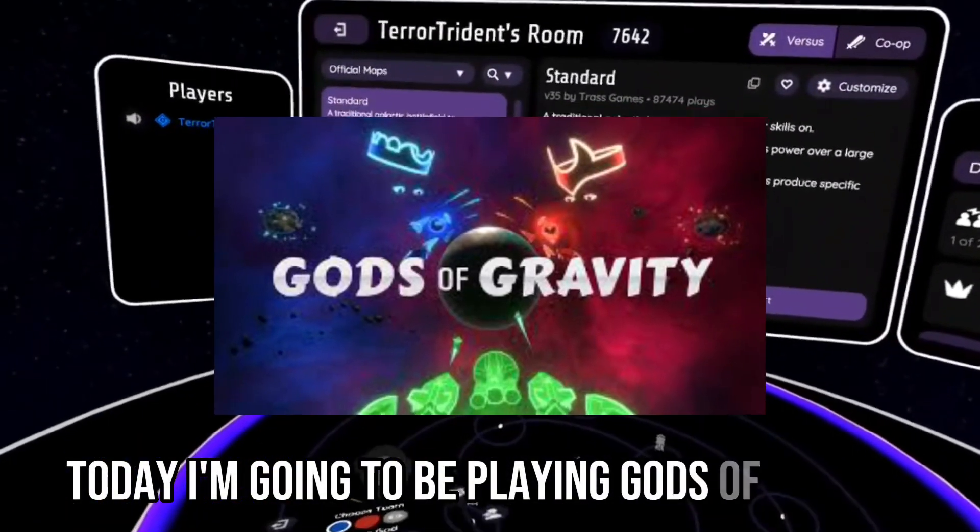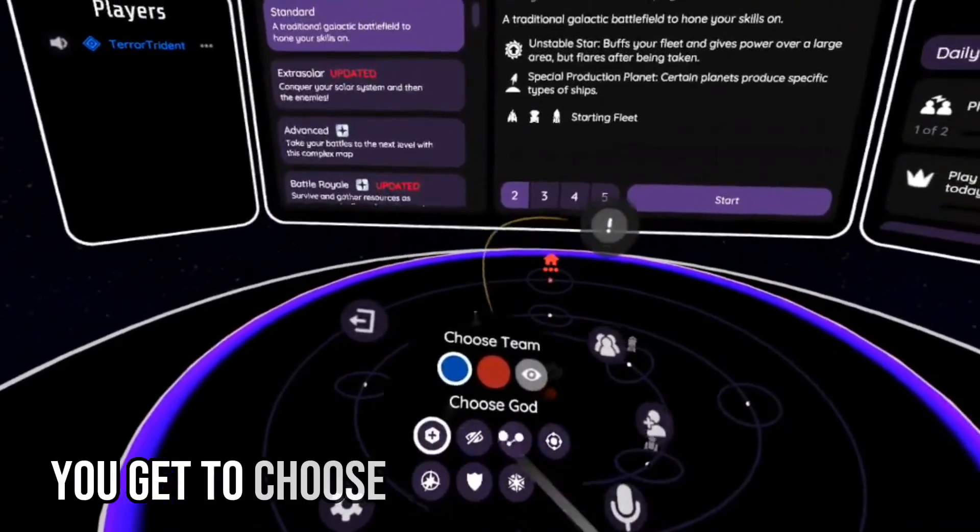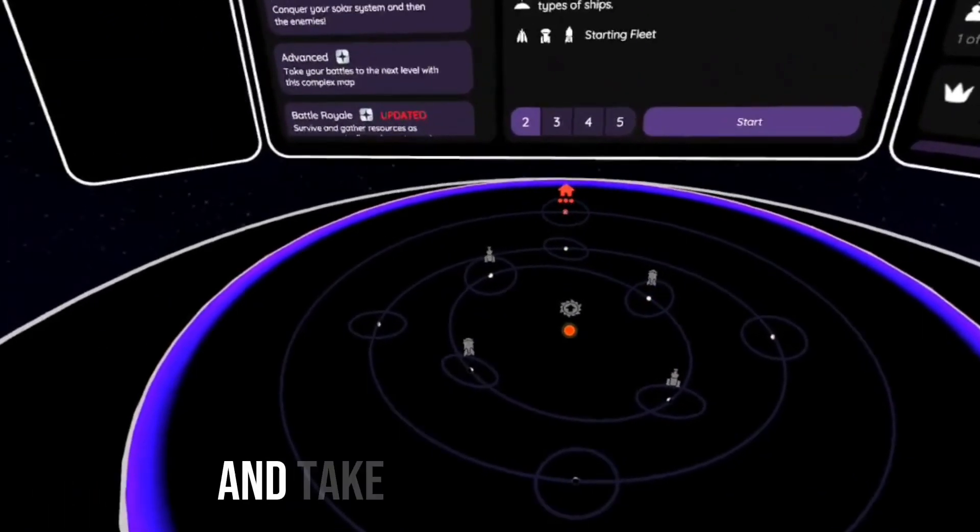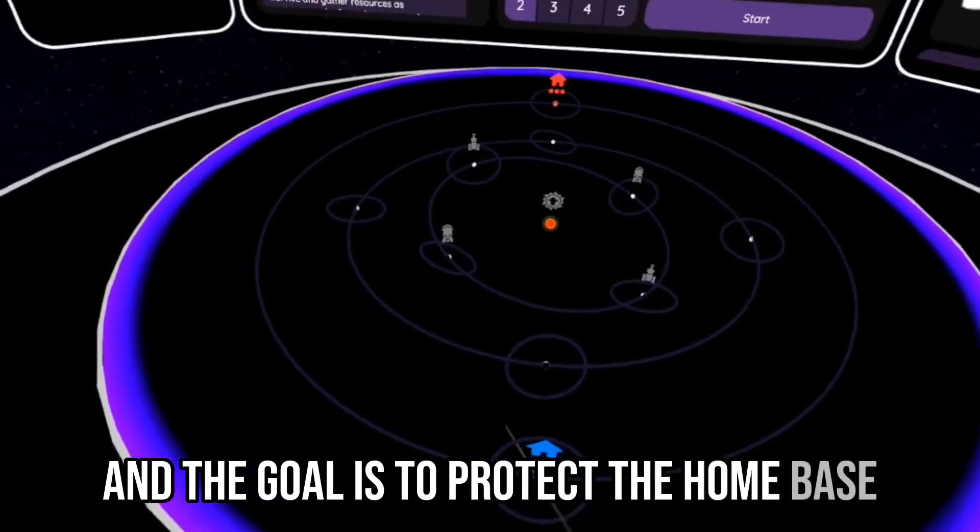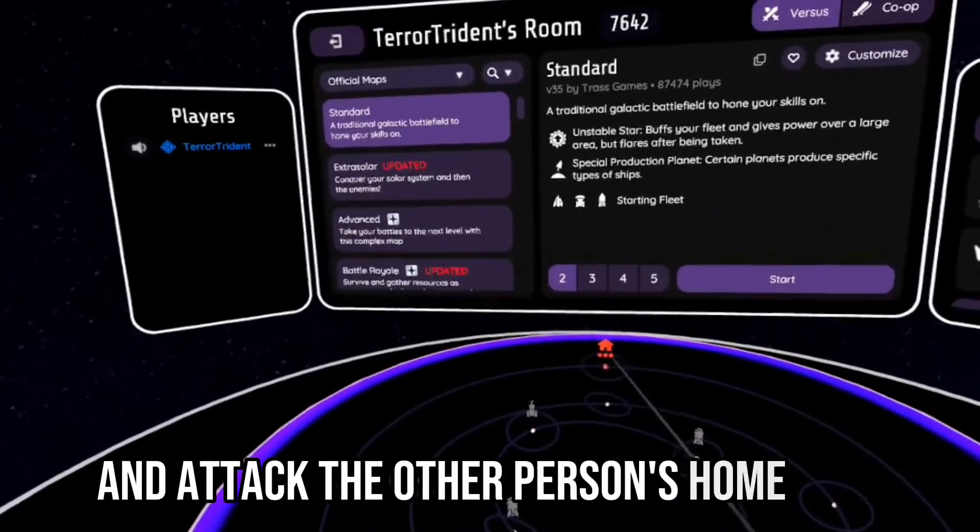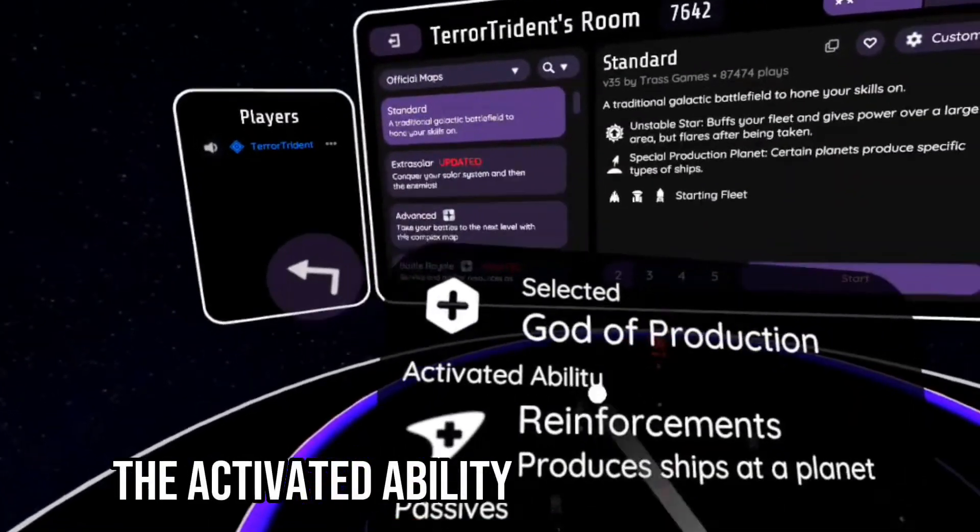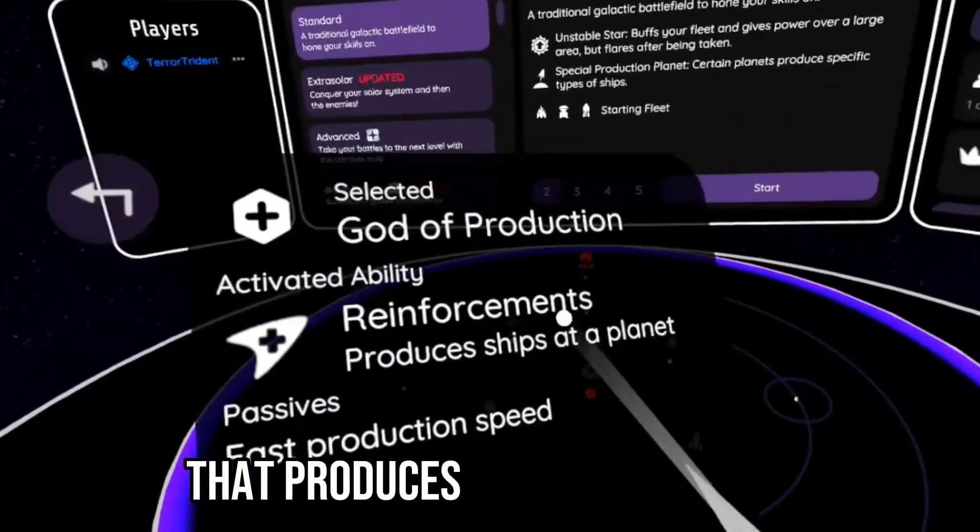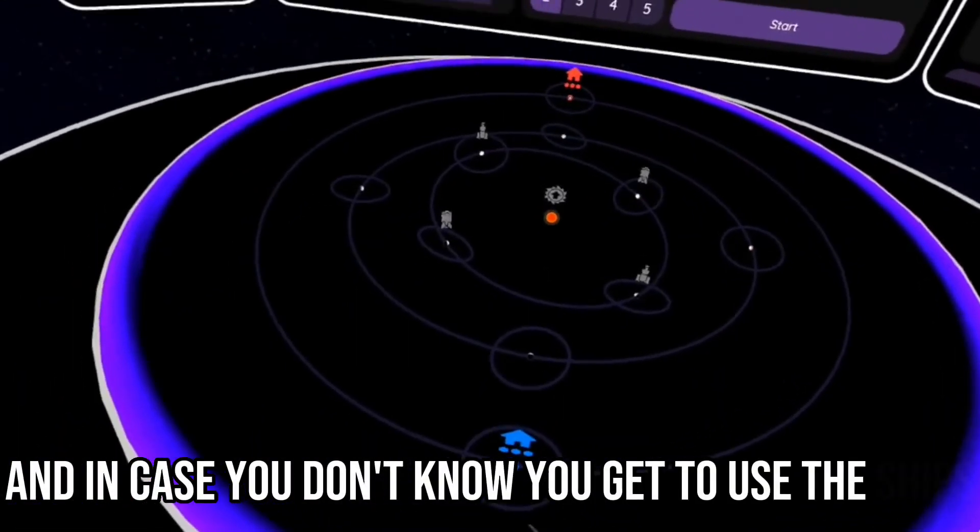Today I'm going to be playing Gods of Gravity. In case you don't know how this game works, you get to choose a god to control planets and take over other planets. The goal is to protect the home base and attack the other person's home base. I'm going to go with the God of Production. The activated ability is reinforcements that produces ships at a planet.